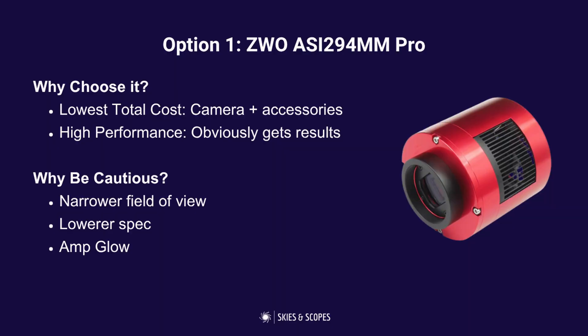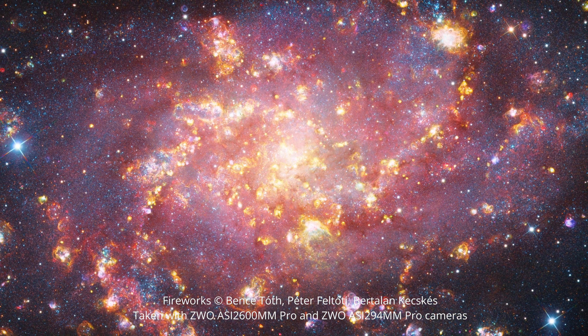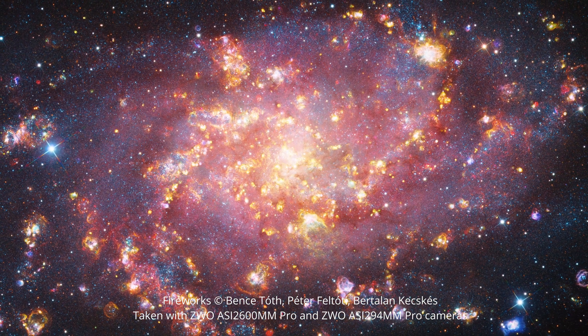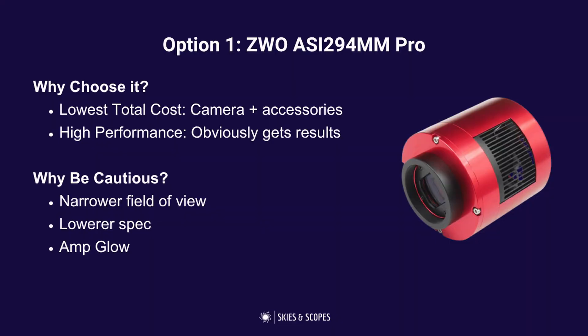We'll start with the 294MM Pro because it's the cheapest — generally just under $1,500 US dollars. This is the best option if budget is your primary concern, and if you're upgrading from a DSLR or a small color camera it makes a great step up. It has the lowest total cost: not only is the camera cheaper but the smaller sensor means it can work with cheaper filters, and it's still getting great results as you can see from the data.